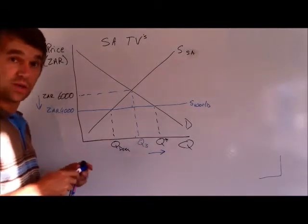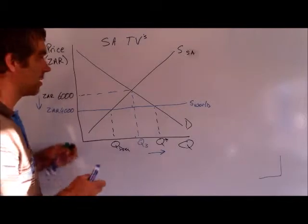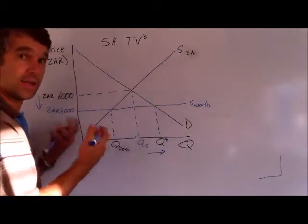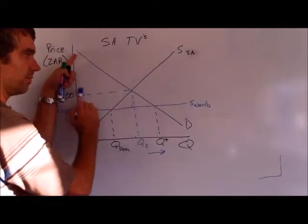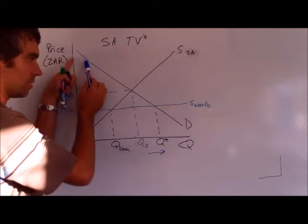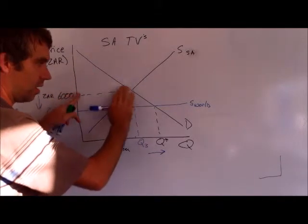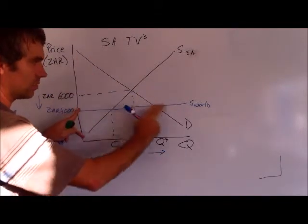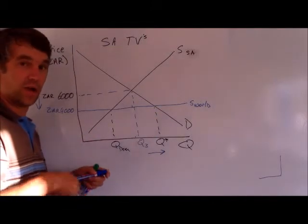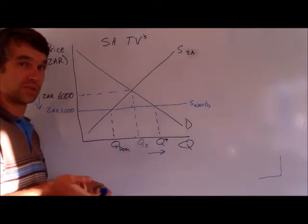Likewise, we can see if we were to look at consumer surplus, we can see that without world trade, so if we were just looking at the black, consumer surplus would have been this triangle here. With world trade, we can see again that their consumer surplus has expanded all the way down to include this much larger triangle. So again, that's just more evidence from the diagram of how this is good for South African consumers.